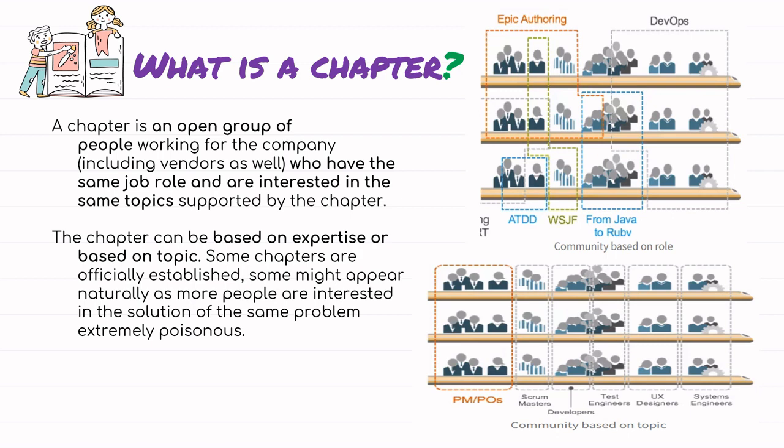So what is a chapter? The main idea behind chapters is how to share knowledge within the company when everybody is a member of some agile release train or different scrum teams. A chapter is a kind of community — an open group of people working for the company who have the same job role and are interested in the same topic. The chapter can be based on expertise or topic. Some chapters are officially established, and some might appear naturally as more people become interested in solving the same problem.